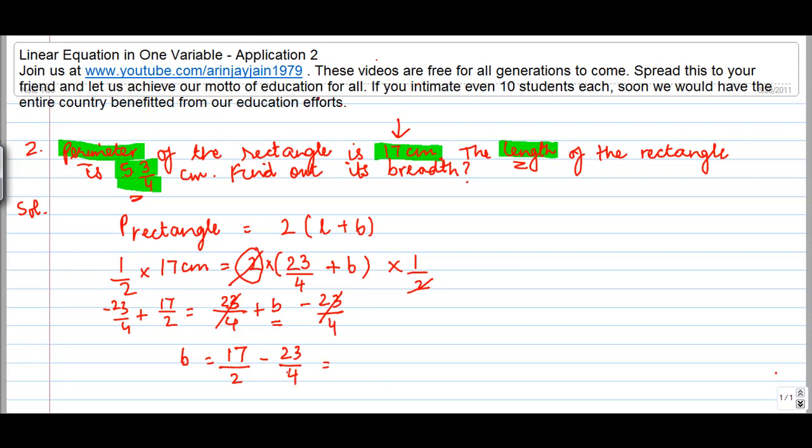Now, if I do a factorization of this, what do I get? I get 4, 4 will go into 2, 2 times 2 into 17 gives me 34 minus 23 is equal to 11 by 4. Therefore, the breadth of this rectangle has to be 11 by 4.